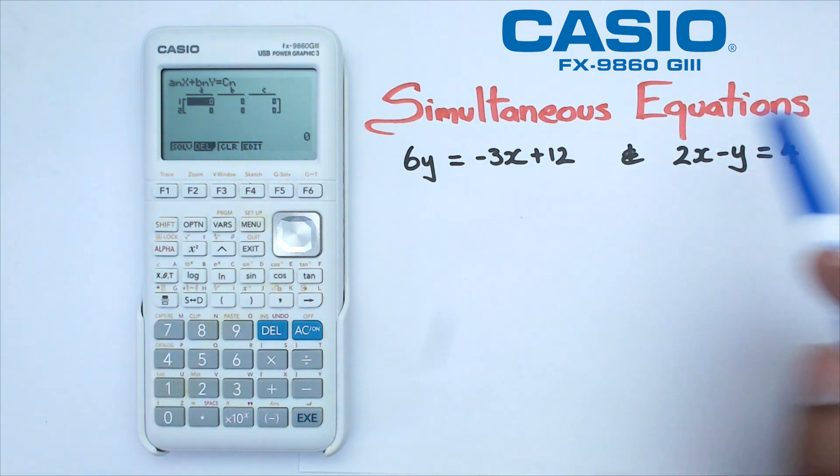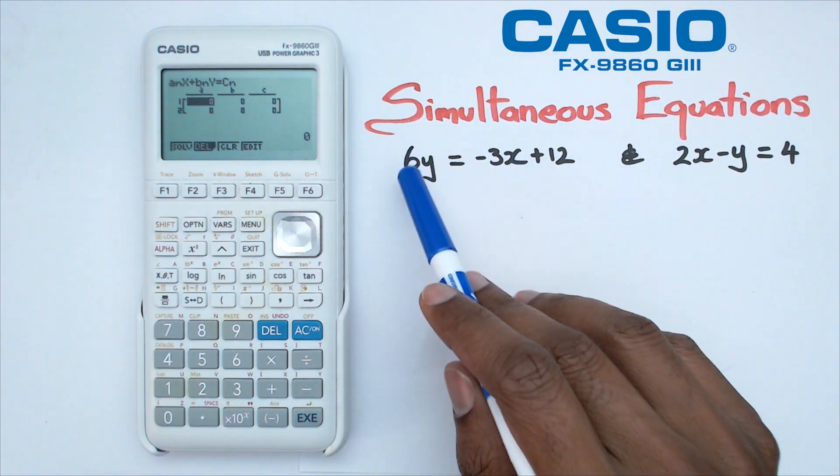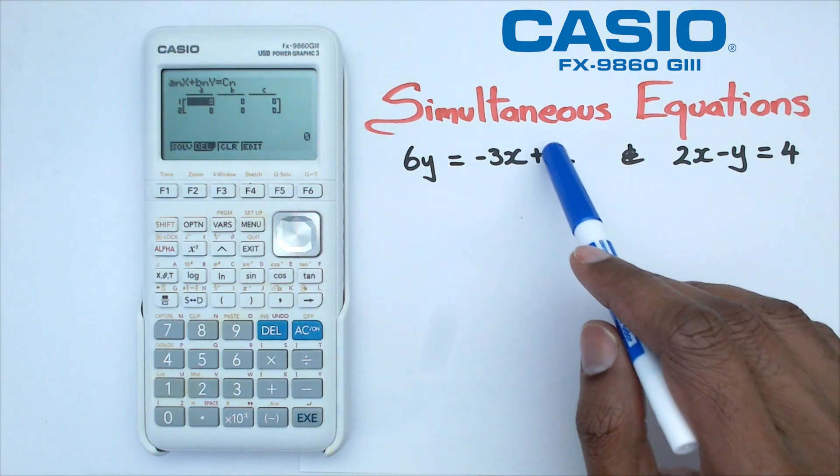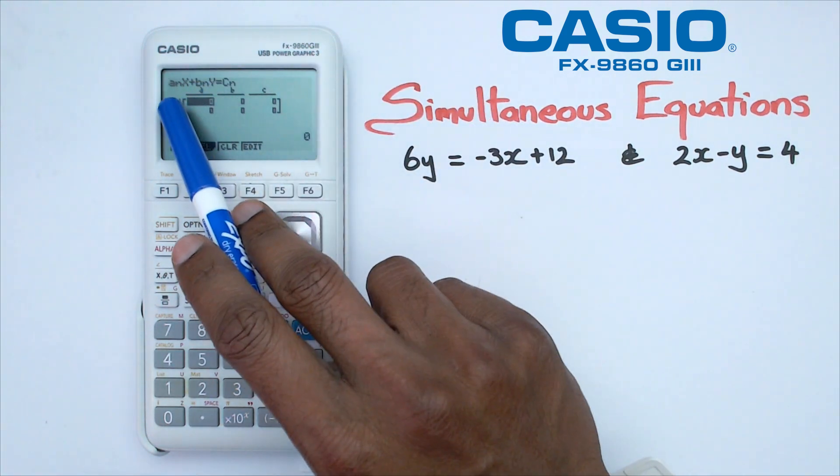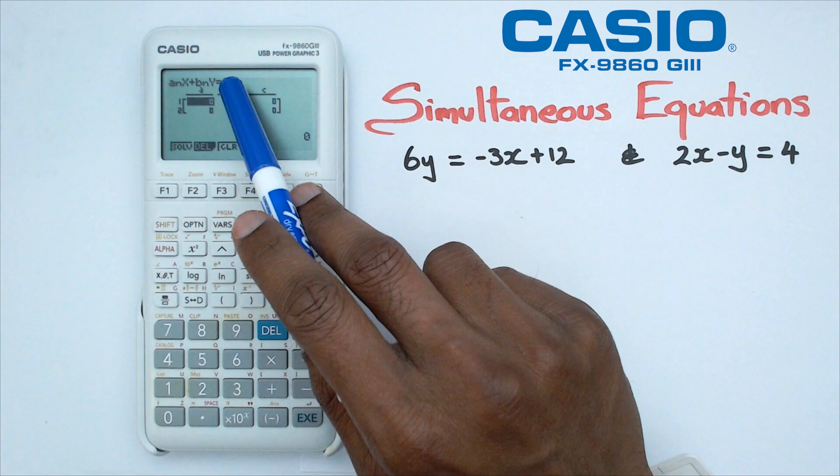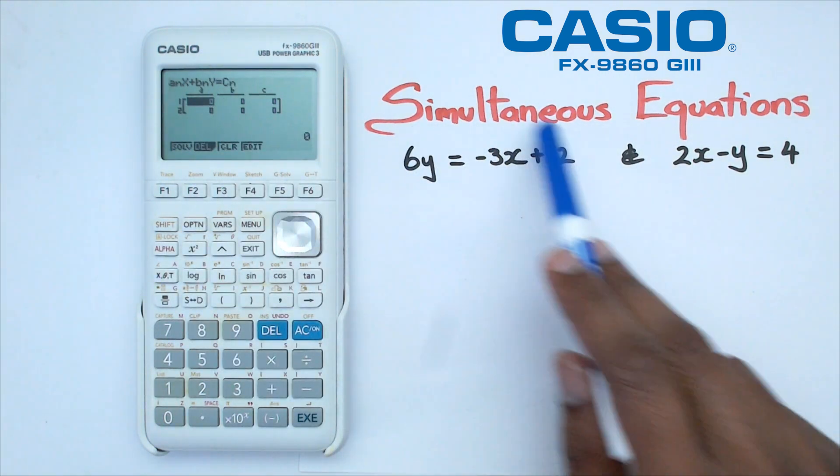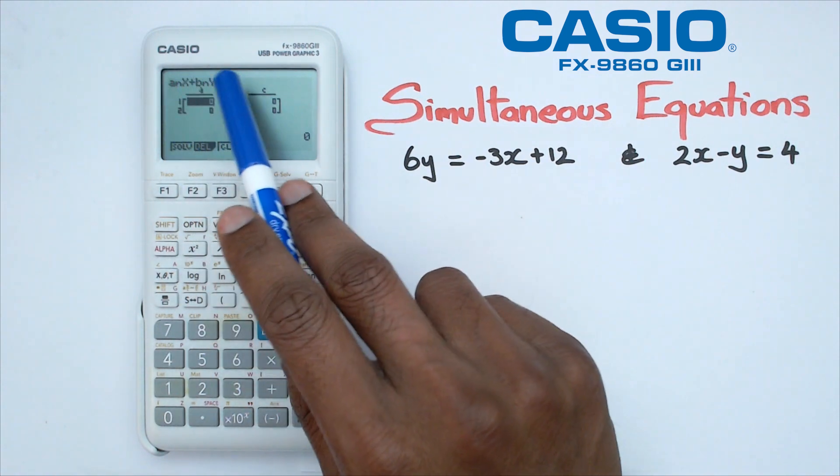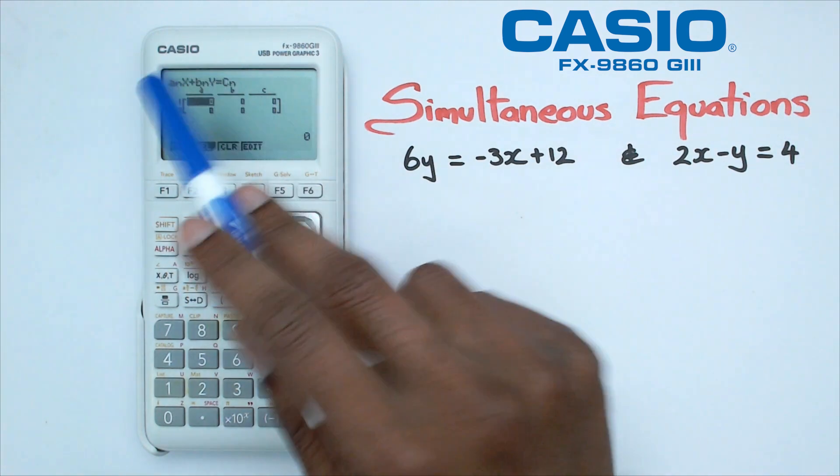But if you look at the first equation, we've got Y and then we've got equals X plus the constant. If you look in the calculator, we actually have X plus Y equals the constant. So you need to rearrange this particular equation so that it matches X plus Y or X and Y as a constant.